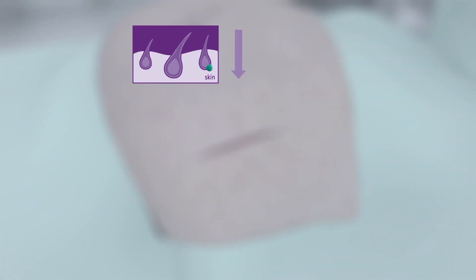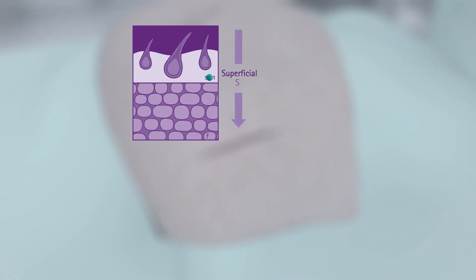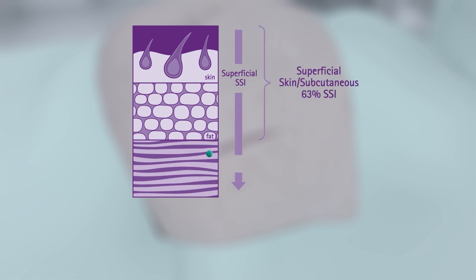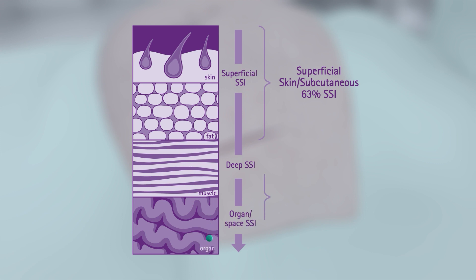There are three types of SSIs. Superficial incisional involves only skin and subcutaneous tissue of the incision. Deep incisional involves deep soft tissue such as fascia and muscle. Organ space involves any part of the anatomy such as organs and spaces.